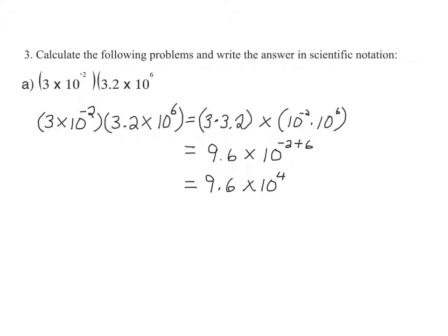And since 9.6 is a number between 1 and 10, this value is already in scientific notation. Therefore, 3 times 10 to the negative second times 3.2 times 10 to the sixth is equal to 9.6 times 10 to the fourth.